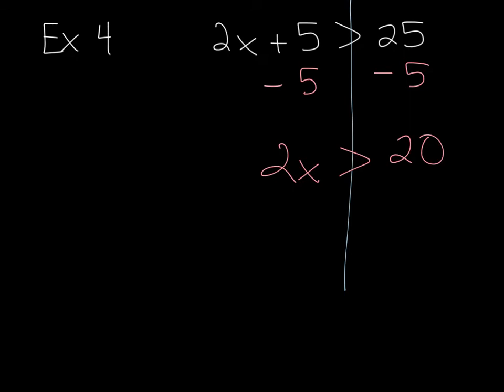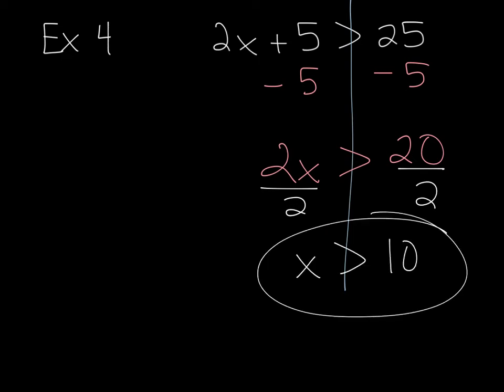So, now, again, just like before, we're going to divide both sides by 2, and I am left with X is greater than 10, because I didn't multiply or divide by a negative, so that stays the same.